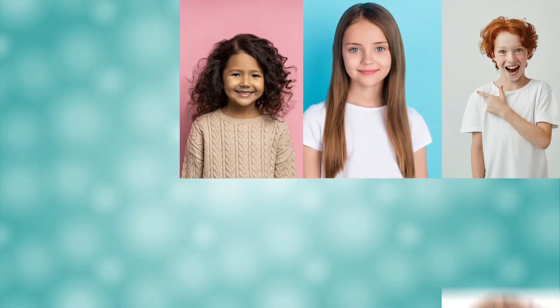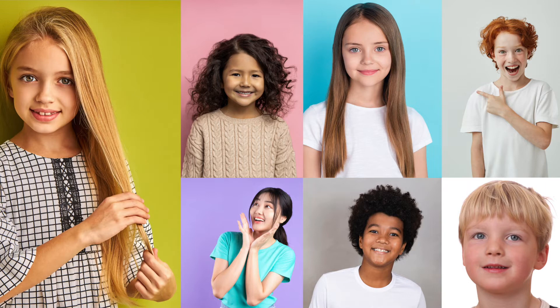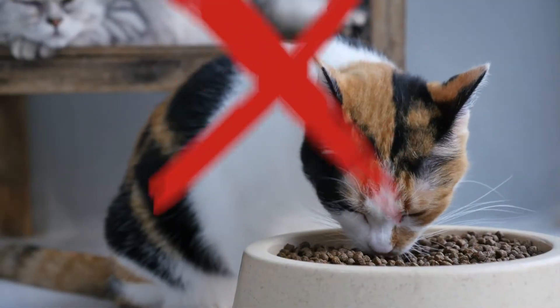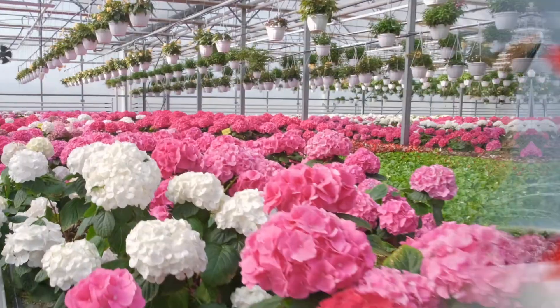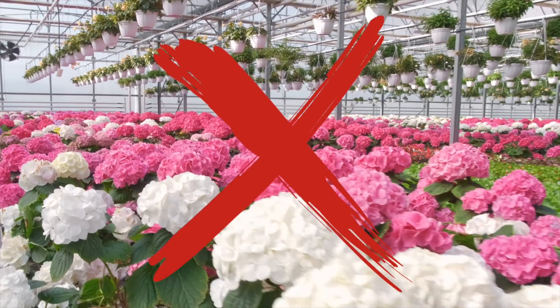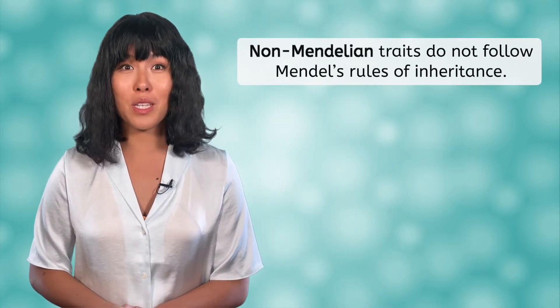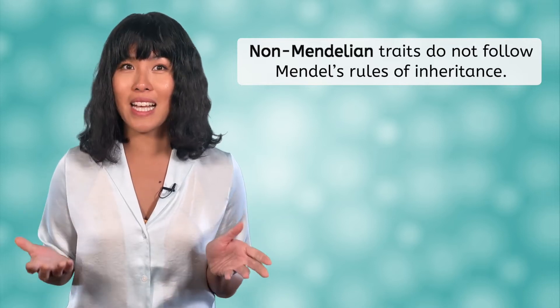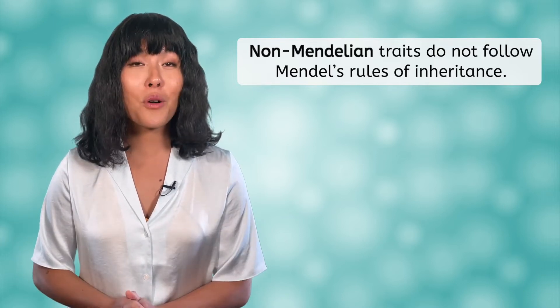But if those rules were true for all traits and all organisms, then humans would only have two possible hair colors, there would be no adorable calico cats, and we might not even have beautiful pink flowers! Clearly something else is going on with the genes that control a large number of traits we are familiar with. It turns out that Mendel's laws do work for many traits, but the expression of others is more complex. Traits that do not follow his rules of inheritance are called non-Mendelian traits, and they will be the focus of our lesson today.